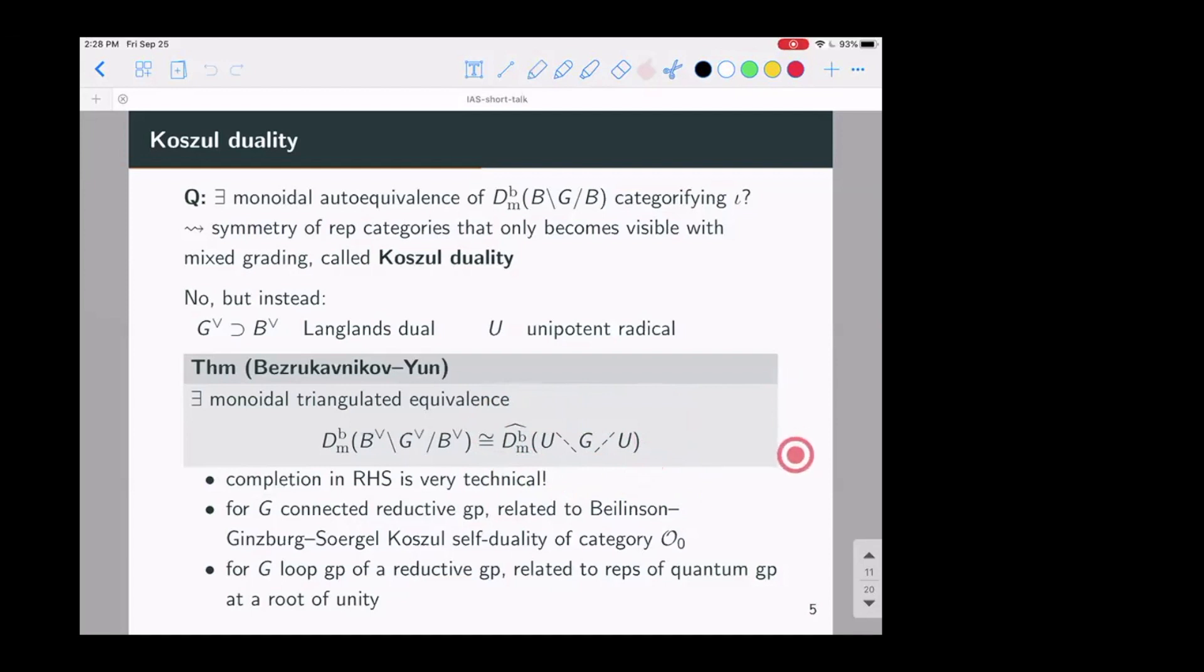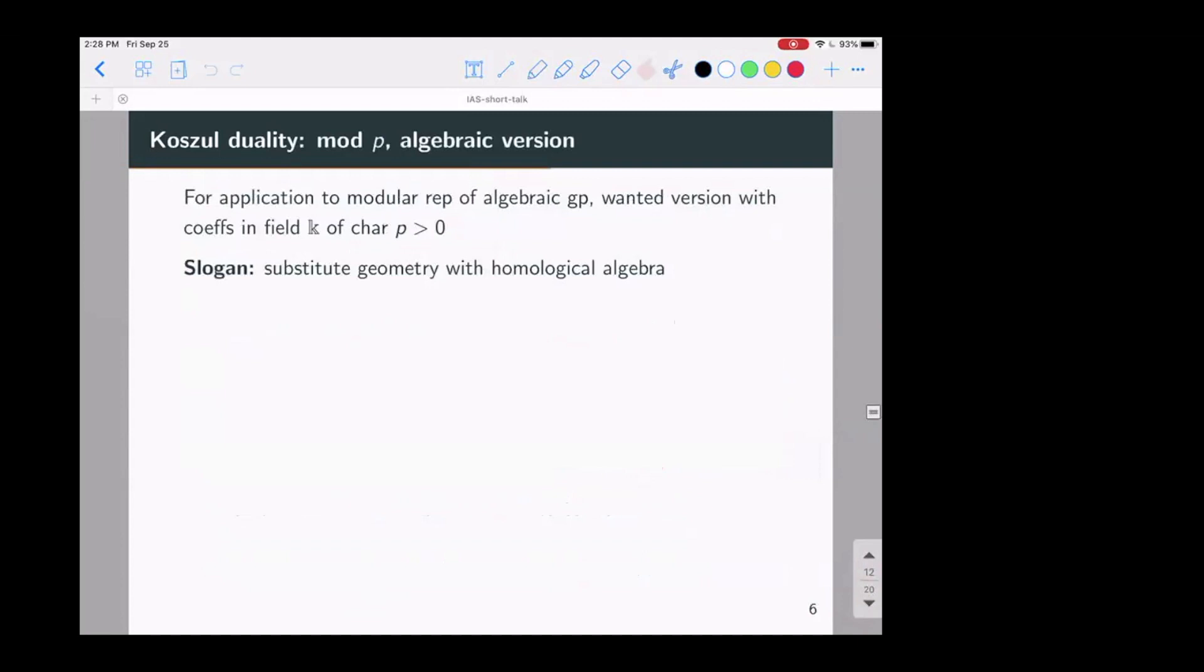So this theorem so far is all in characteristic zero. We're working with sheaves of characteristic zero coefficients. But for application to modular representation theory, you want some version of this duality with coefficients that feel a positive characteristic. And the problem here is that things like mixed elliptic sheaves just don't behave as nicely. There are much fewer tools that you can work with. And so one slogan is you try to replace geometry with some homological algebra.